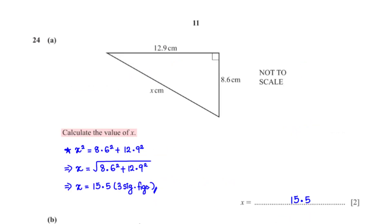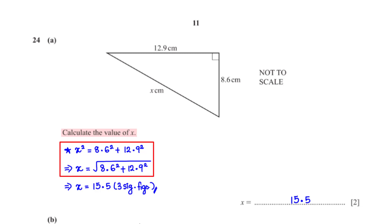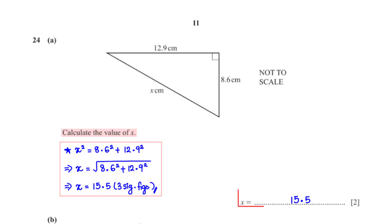Calculate the value of x. To find the value of x, we apply the Pythagoras theorem. This gives us x squared equals 8.6 squared plus 12.9 squared. To make x the subject, we take the square root of both sides. When we type this into the calculator, we get 15.5 rounded to 3 significant figures.